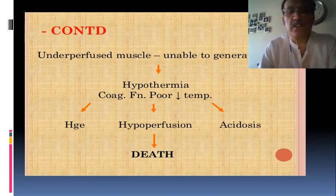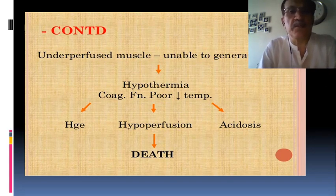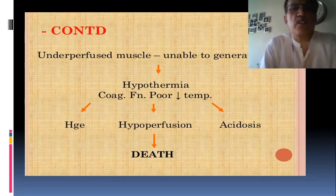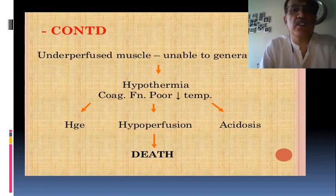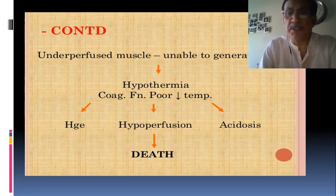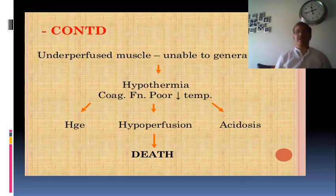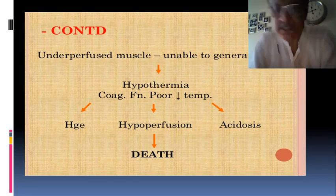If hemorrhage continues or the perfusion of the muscles remains under-perfused and the muscles are unable to generate heat, then there will be hypothermia. Coagulation becomes more impaired, temperature decreases, leading into further hemorrhage, hypoperfusion, and acidosis. If not treated, this will lead to death.